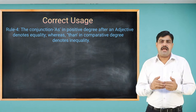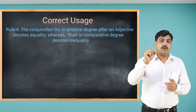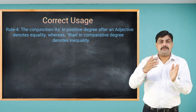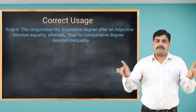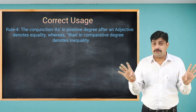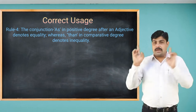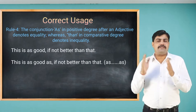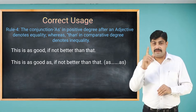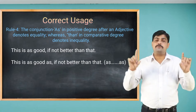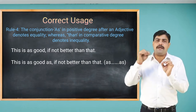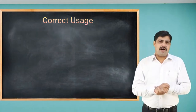Rule number four: the conjunction 'as' in positive degree after an adjective denotes equality, whereas 'than' in the comparative degree denotes inequality. 'As' means equality, 'than' means inequality — they cannot be interchanged. For example: 'This is as good if not better than that.' In the second clause, 'if' is wrong — it must be 'as' because we are talking about positive degree. The correct sentence is: 'This is as good as, if not better than, that.'